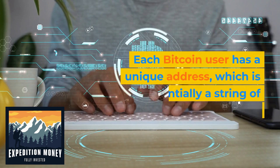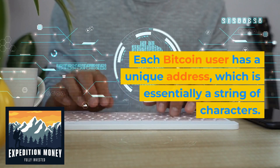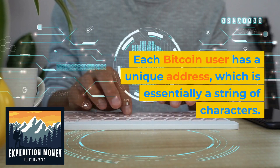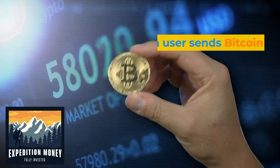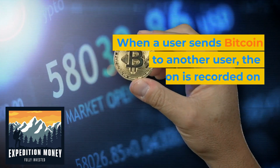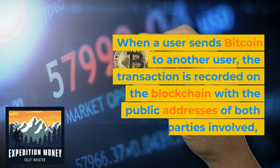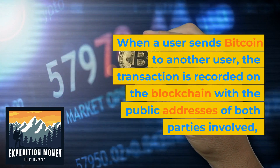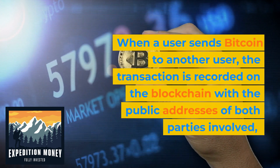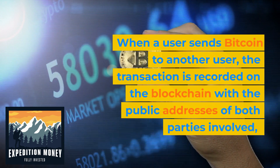Each Bitcoin user has a unique address, which is essentially a string of characters. When a user sends Bitcoin to another user, the transaction is recorded on the blockchain with the public addresses of both parties involved.